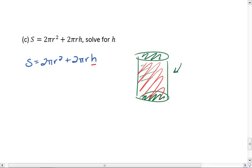All right, we notice that H is only in this far right term. So we're going to subtract 2 pi R squared to the other side. This gives us 2 pi R H equals S minus 2 pi R squared.